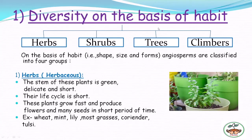Diversity on the basis of habit includes the shape, size, and forms. Angiosperms are classified into four groups: herbs, shrubs, trees, and climbers.